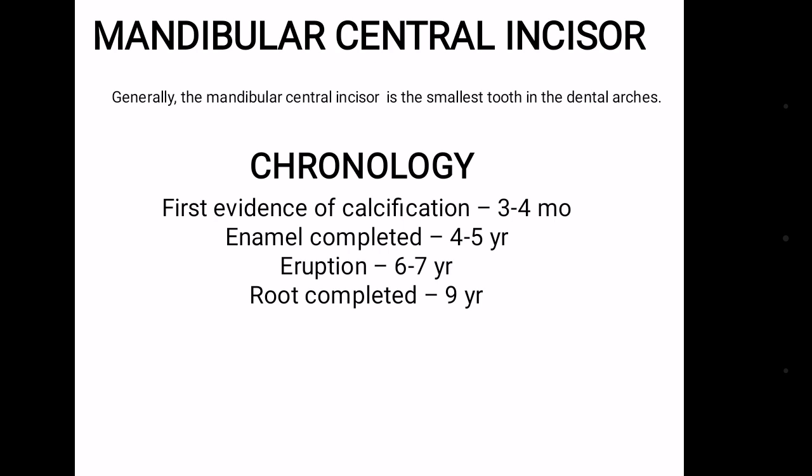Generally, the mandibular central incisor is the smallest tooth in the dental arch. Chronology: The first evidence of calcification is noticed at the age of 3 to 4 months. Enamel is completed by 4 to 5 years. It erupts in the oral cavity at the age of 6 or 7. The root is completed by 9 years.